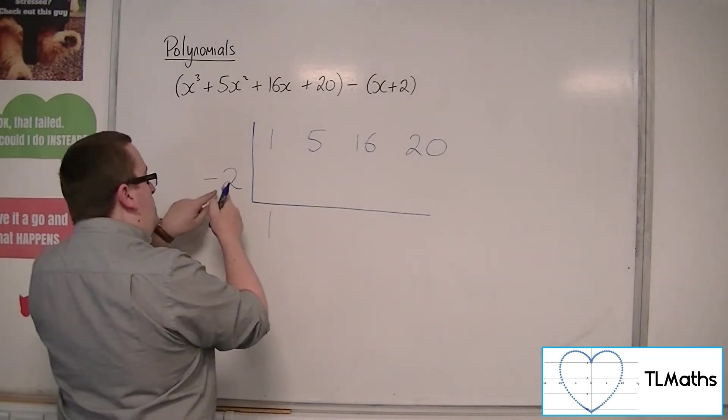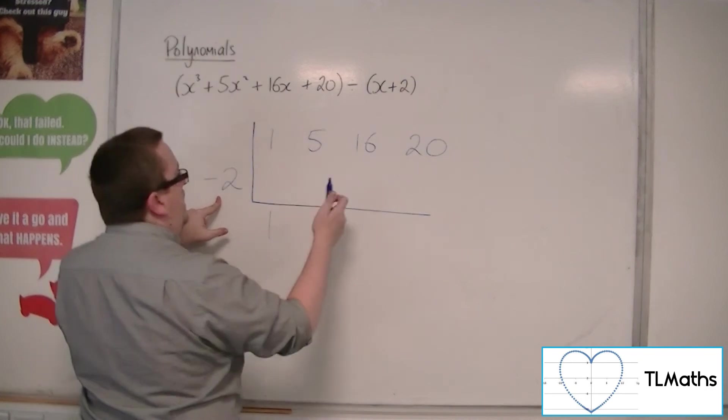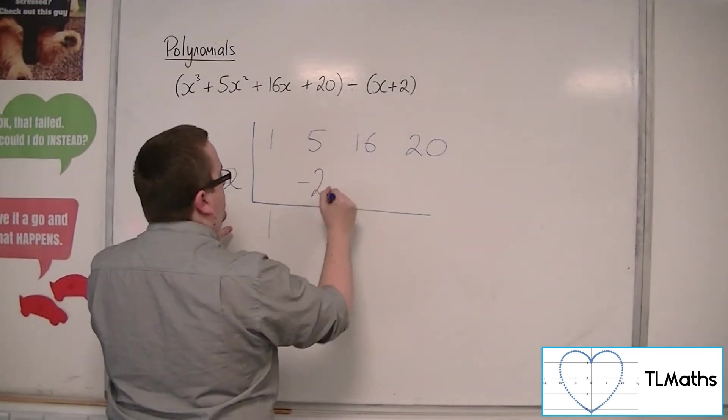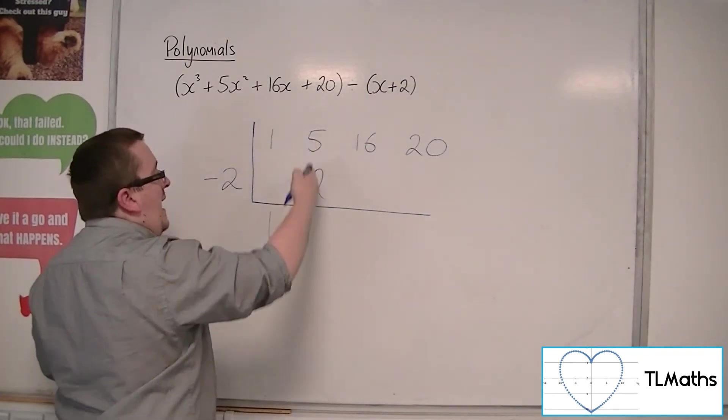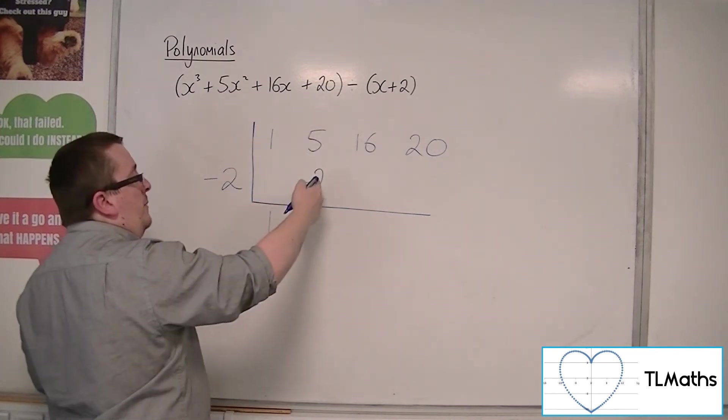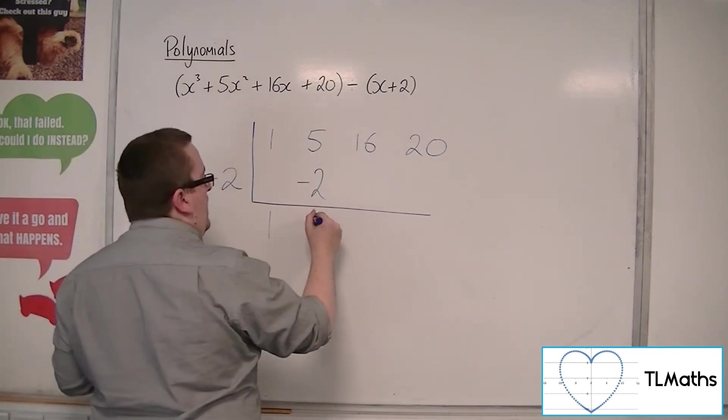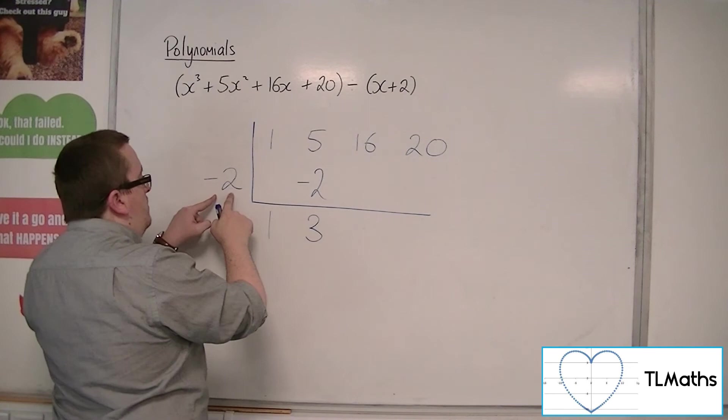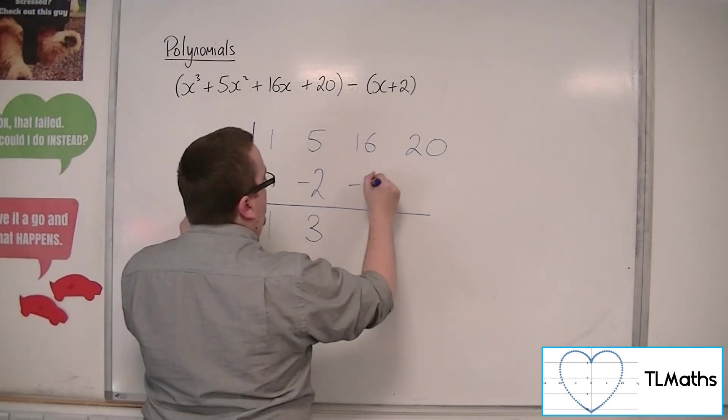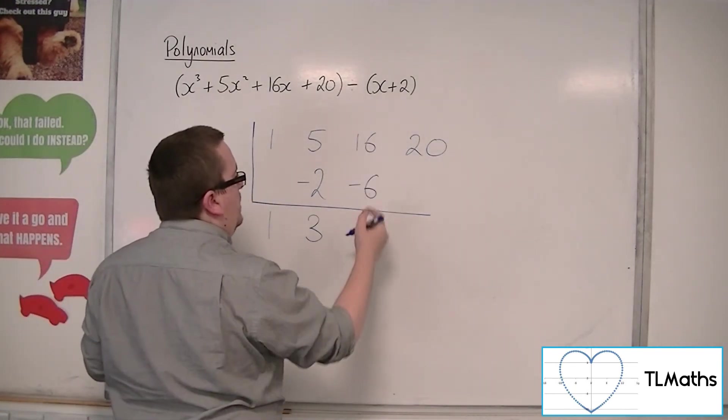What we then do is we do minus 2 times 1, and we place it here. And then we add these two numbers together. So we would get 3. We then do minus 2 times 3, that gets us minus 6. Add them together, we get 10.